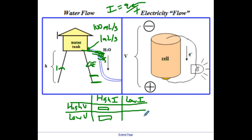Another analogy I like to give: I take my grade nines out into the hallway and have them pretend to be particles. I have one kid run down the hallway — that's low current but high voltage. Then I have the whole class run — that's high current, high voltage, because there are many of them and they're moving fast. Then I have the whole class walk — there's a lot of current because they're all in motion, but not a lot of energy change. Finally, one student walking would be low current, low voltage.